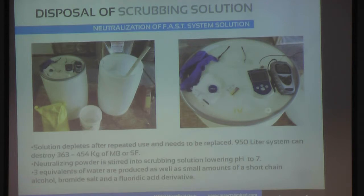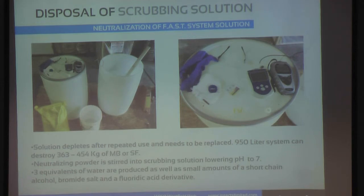During the neutralizing process, you're creating three equivalents of water. Also produced are small amounts of a short-chain alcohol and a bromide salt. If you're using SF, a fluoridic acid derivative is also produced, but that's all maintained within the solution and is non-hazardous.